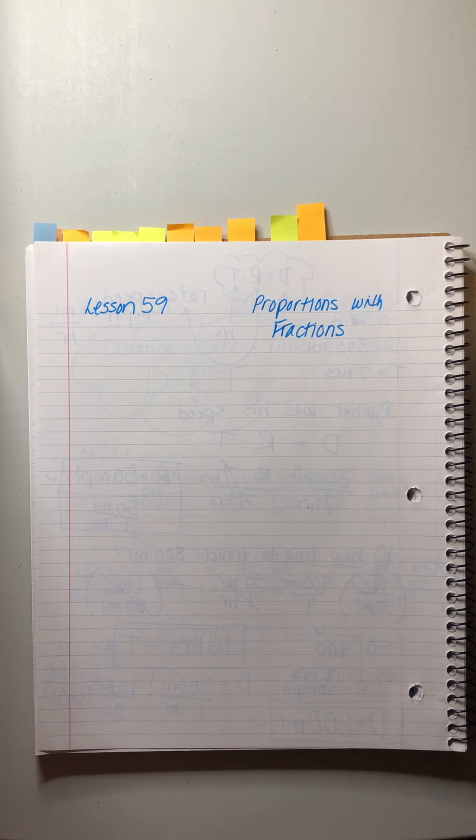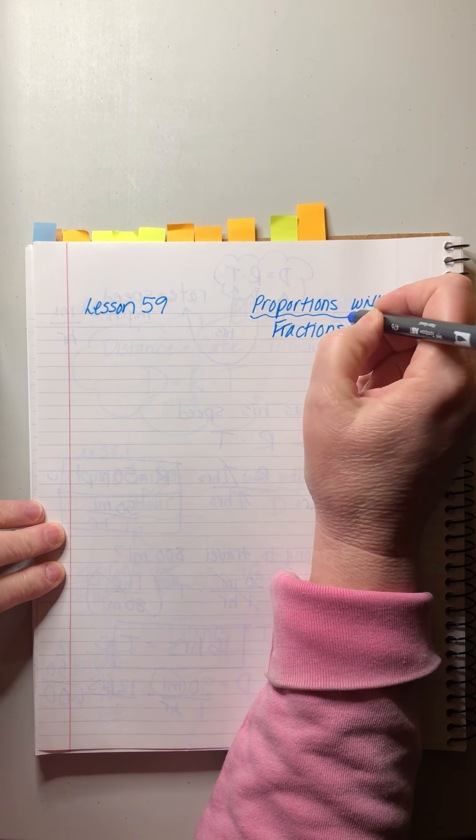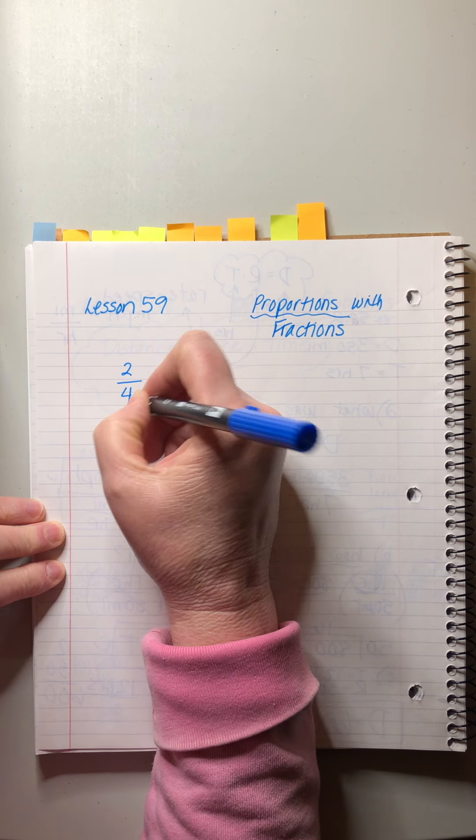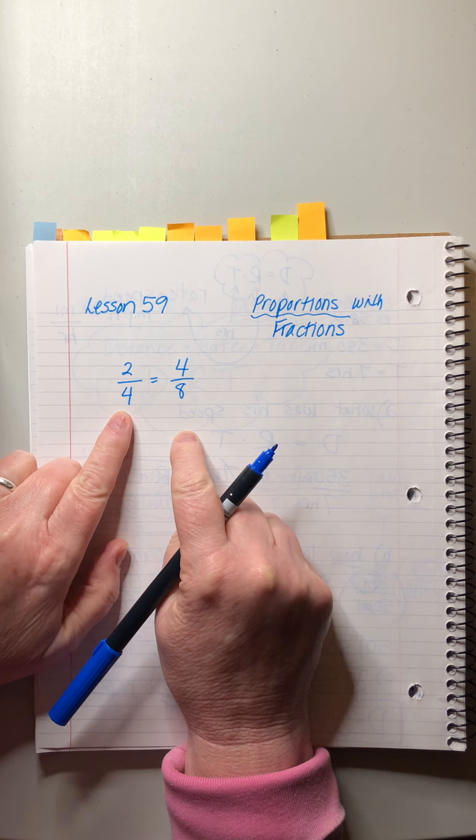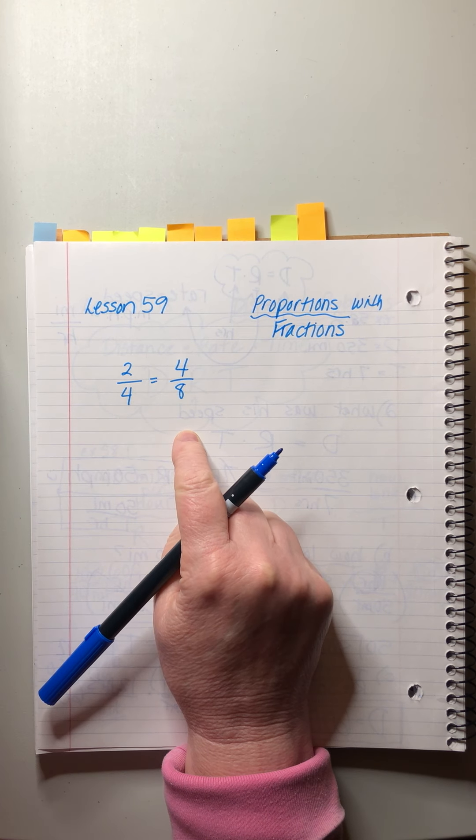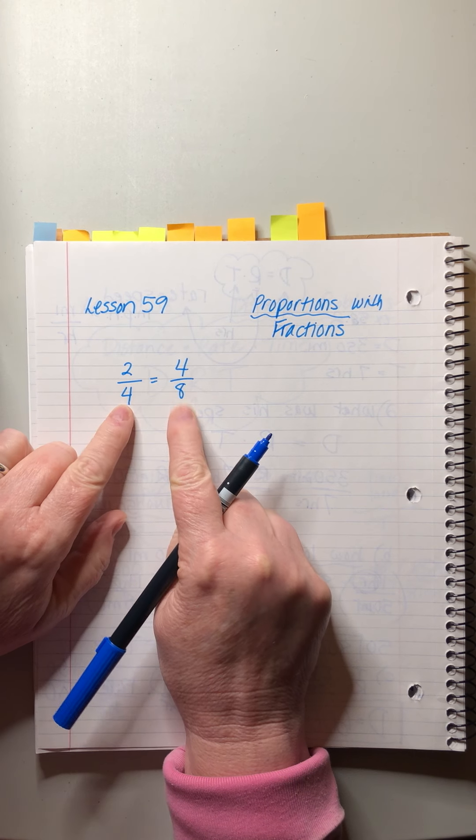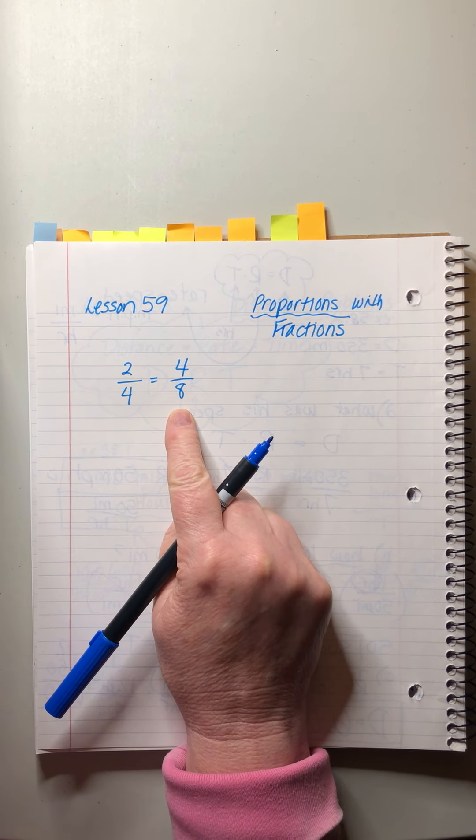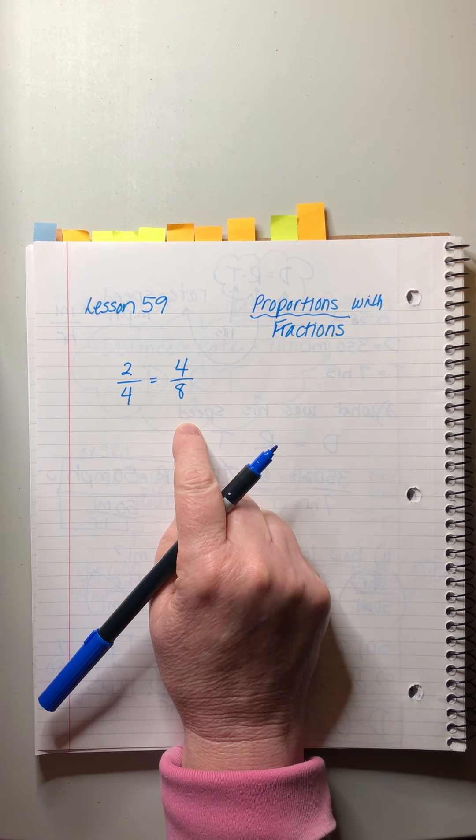All right, that's enough distraction for now. Proportions, we remember, is just a fancy name when we have something like this: 2/4 equals 4/8. It's a pair of fractions, each one could be considered a ratio because we learned that a ratio is just a fraction. When you set them equal to each other, they're true. You can have a false one if you just put random numbers in there, but a proportion is when the two fractions really are equal to each other.